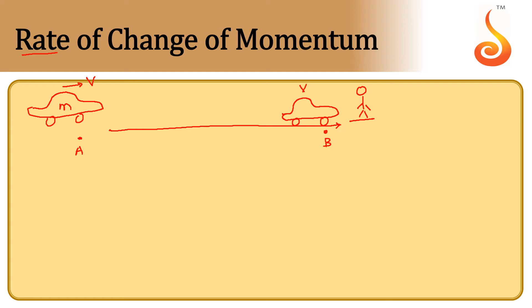Because velocity V' is 0, the final momentum of the car is 0. But the initial momentum of the car is MV. To reduce its velocity from V to 0, the car has taken some time t.